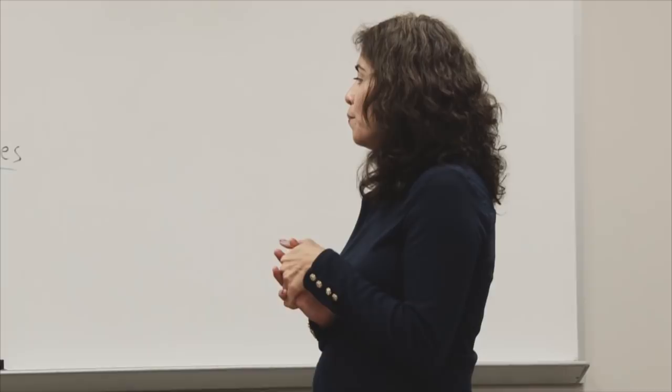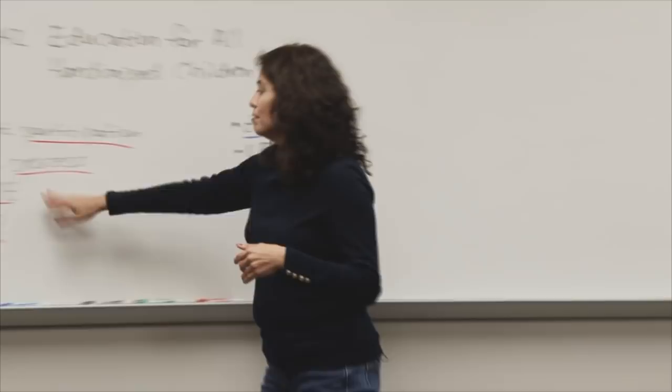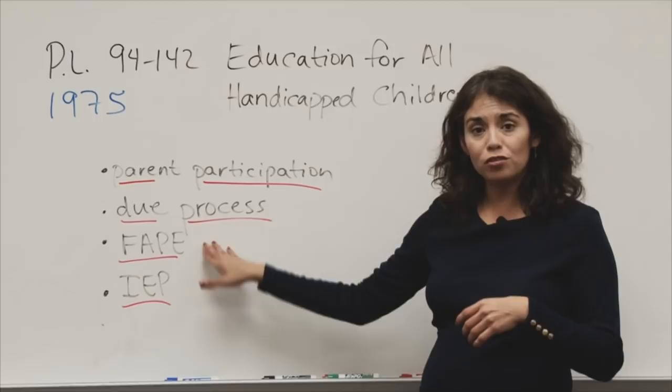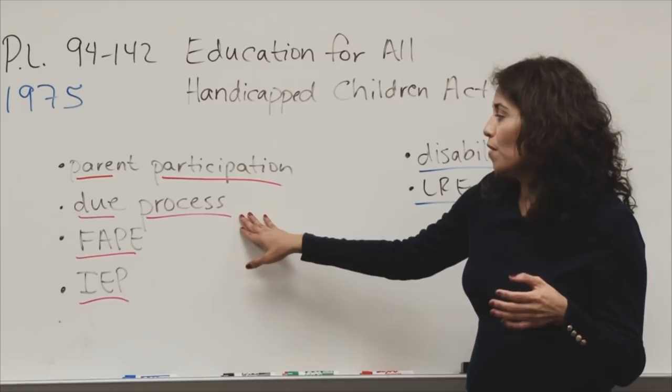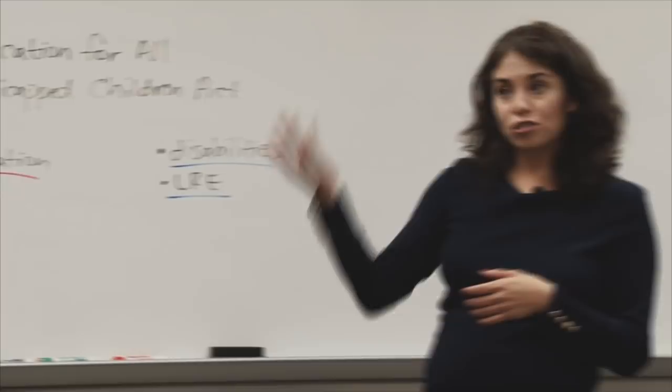All the principles are connected. If parents are not satisfied with the type of education their child is being given or offered, they have a right to due process. They have a right to be satisfied, just like any other parent. If I'm not happy with my child's teacher, I have a right to question the principal or that teacher — and parents of students with disabilities have that right as well.